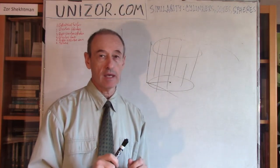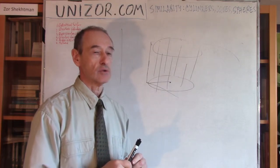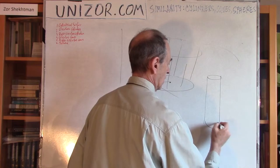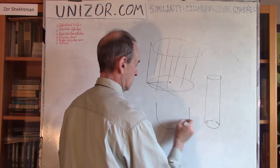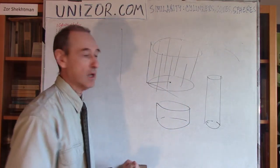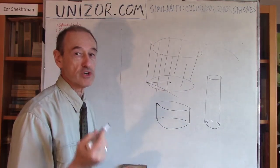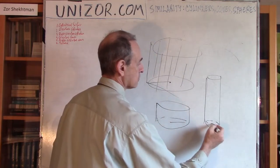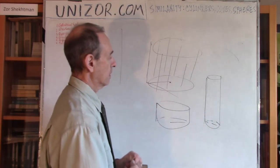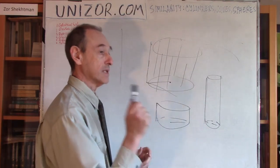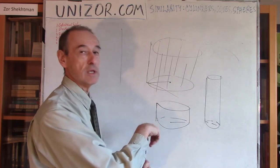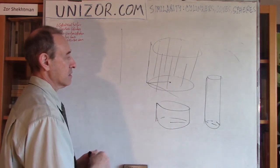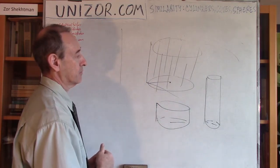I did not say, and it would be incorrect, that all right circular cylinders are similar to each other. For instance, one can be thin and another can be short and fat — they are not similar to each other, because similarity assumes proportionality. The height should relate to the height as the radius relates to the radius. So I'm not saying all cylinders are similar to each other, but if they are similar, then one being a right circular cylinder means the other is also a right circular cylinder. From similarity follows the identity of the type.